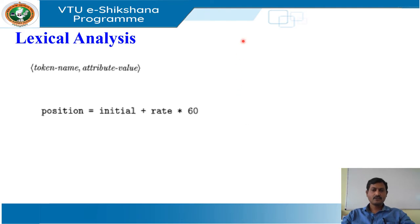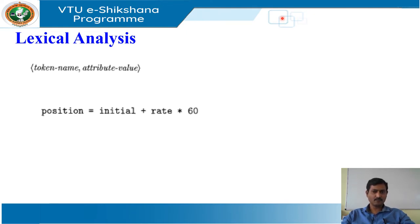In the token, the first component, that is a token name, is an abstract symbol that is used during syntax analysis. The second component, attribute value, points to an entry in the symbol table for this token. The information from the symbol table entry is needed for semantic analysis and code generation.